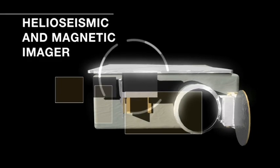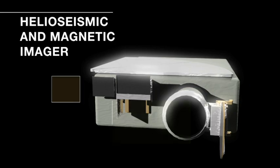HMI is the helioseismic and magnetic imager. Very long words for something that's very useful to look at on the Sun.